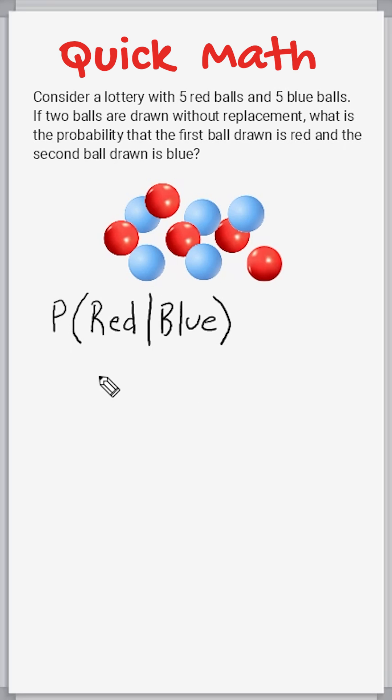So let's determine first the probability of selecting a red ball. There are 10 balls in total, so that is our denominator, and out of those 10, five of them are red.